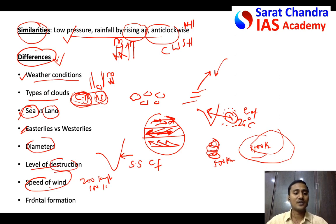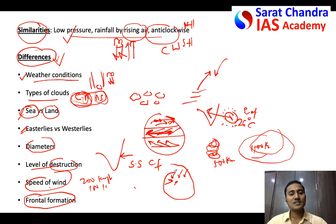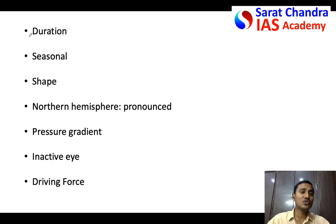Seventh difference: frontal formation. Temperate cyclones form when polar easterlies (cold, low-humidity winds from polar areas) collide with westerlies (which are slightly warm with more humidity). These contrasting winds form fronts, and around those fronts the temperate cyclone develops. Tropical cyclones develop only because of evaporation — no frontal collision required.